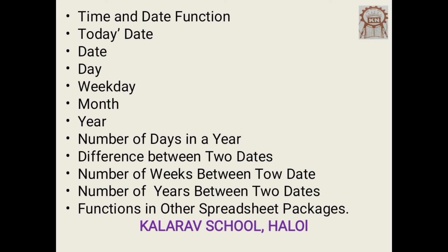The WEEKDAY function is used to convert a valid date into a day of the week. Days are numbered from 0 to 6. For example, =WEEKDAY(DATE(2013, 7, 11)) returns 5. Next, the MONTH function is used to convert a valid date into the month number. For example, =MONTH(DATE(2013, 7, 11)) returns the month number.